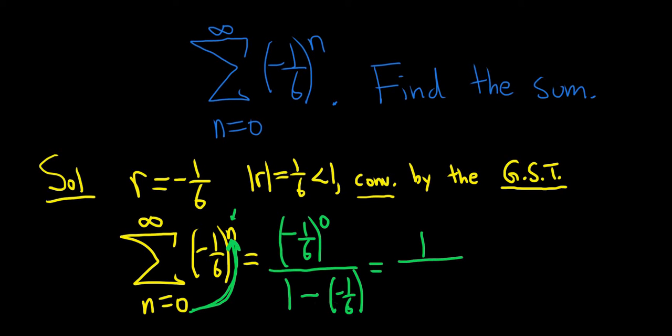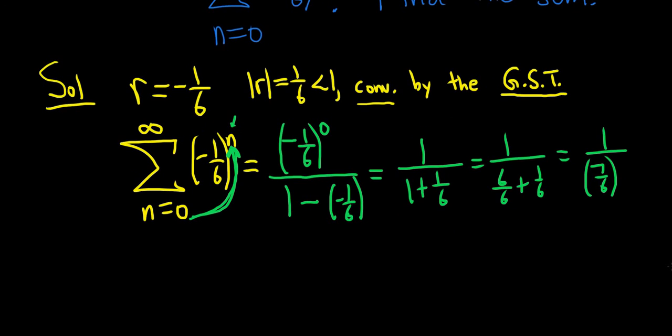And so here you get one plus one-sixths. This is one over, so this is six-sixths plus one-sixths. This is one over seven-sixths. One over seven-sixths is one times six-sevenths. It's multiplication by the reciprocal. So this is six over seven, and that would be the sum.